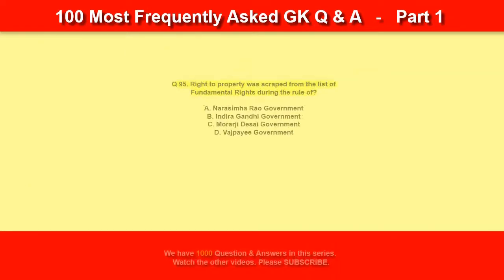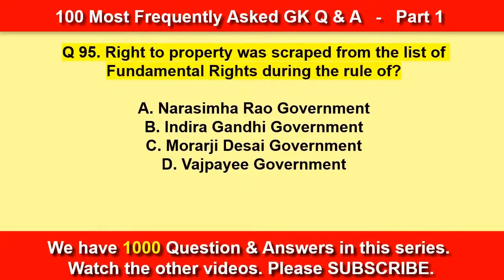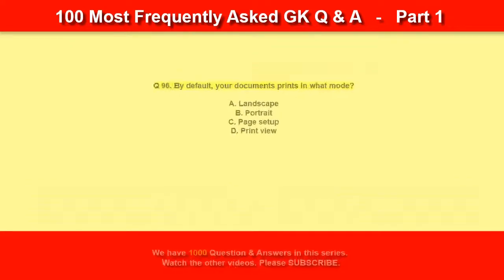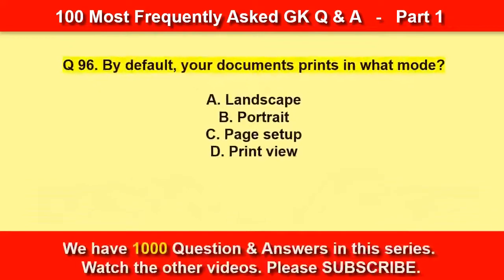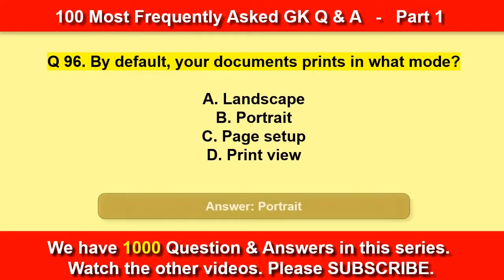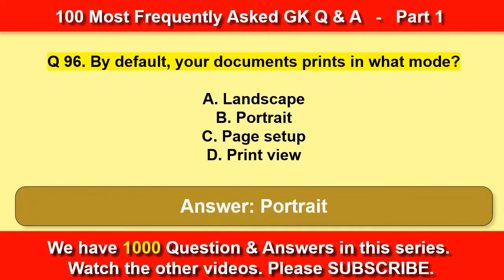Right to property was scrapped from the list of fundamental rights during the rule of — Morarji Desai government. By default, your document prints in what mode? Portrait mode.